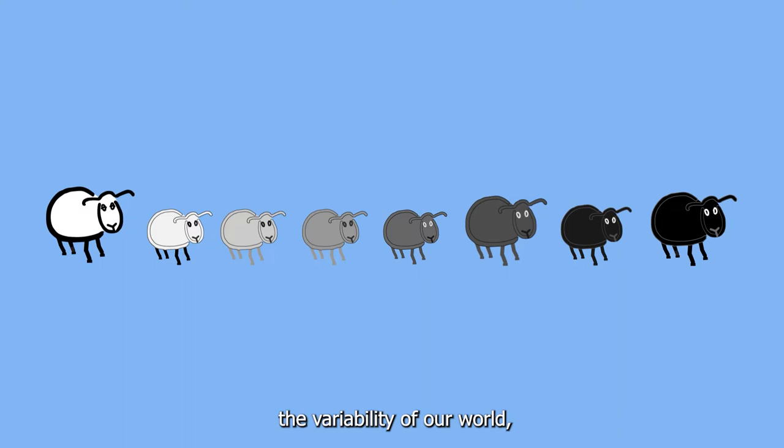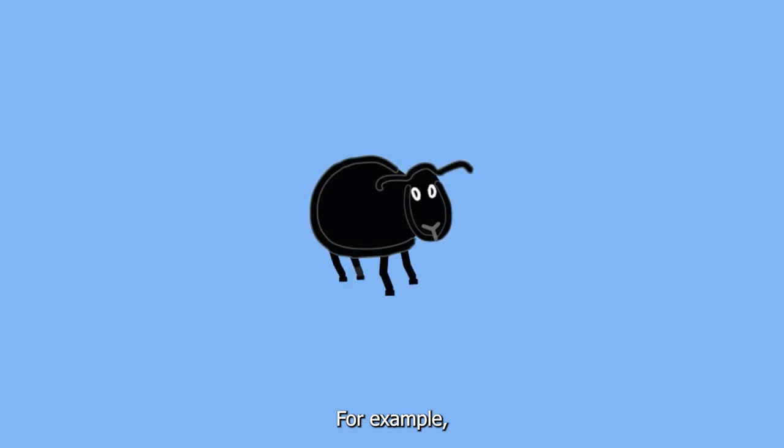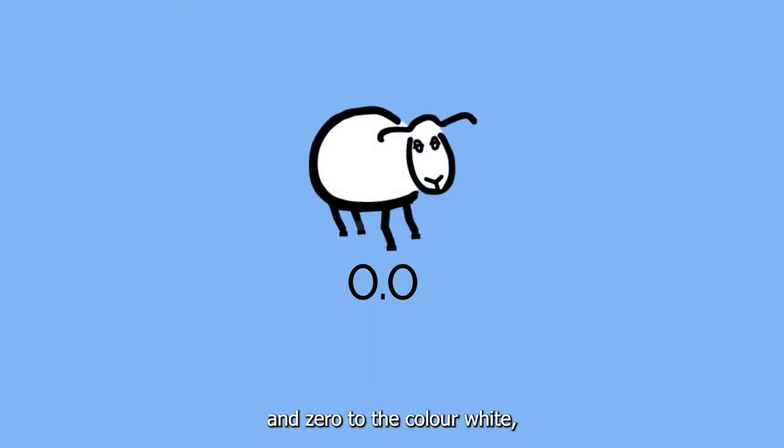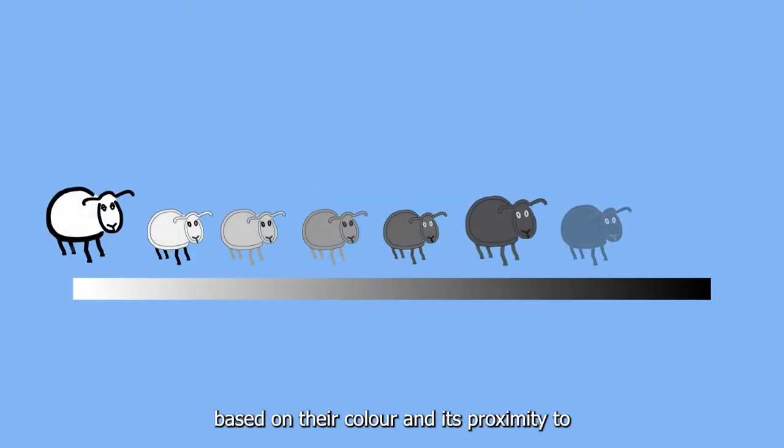For example, if we assign a value 1 to the color black and 0 to the color white, we can give each sheep a number based on their color and its proximity to the colors black or white.